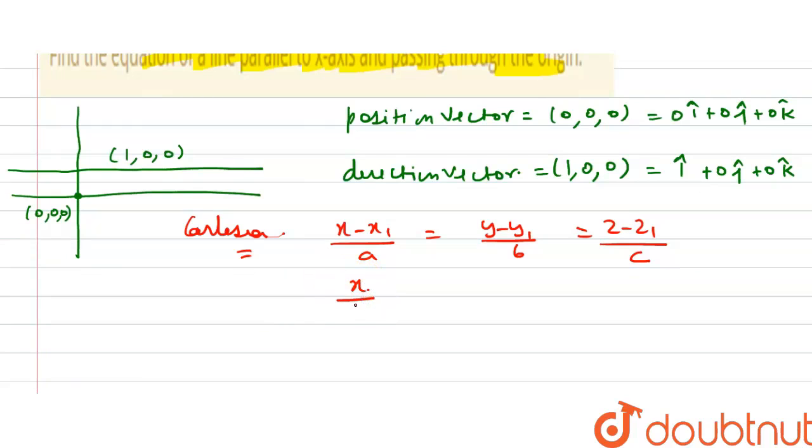So here Cartesian format is x₁, y₁, z₁ is zero here. So x/a, a is 1 here, equal to (y - 0)/0 is equal to (z - 0)/0. So this is the equation of the Cartesian form.